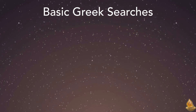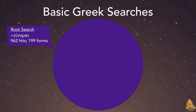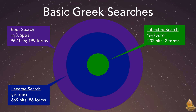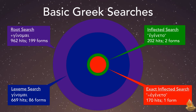Let's look at our results using a graphic. The root search for ginomai yielded 962 hits and 199 forms. The Lexeme search found 669 hits and 86 forms. The inflected search for egeneto found 202 hits and 2 forms. And finally, the exact inflected search for egeneto without the capital letter incurs just 170 times using just this single form.